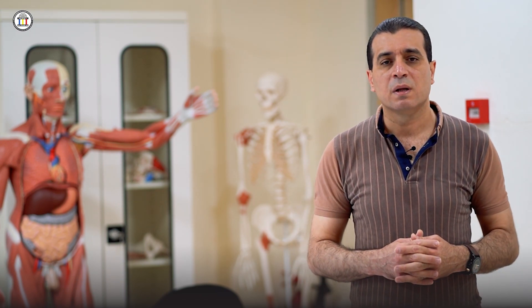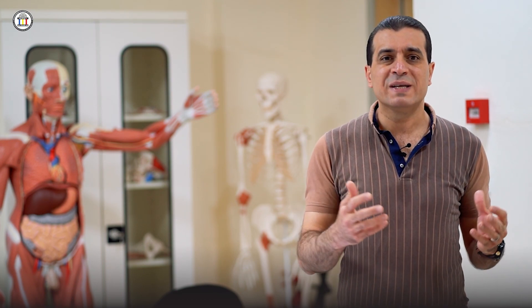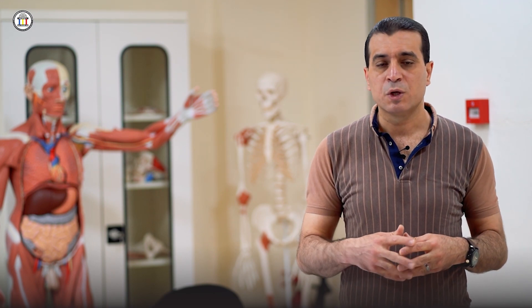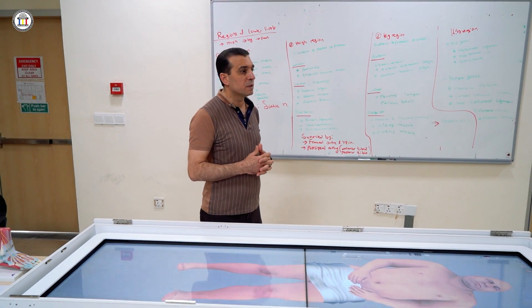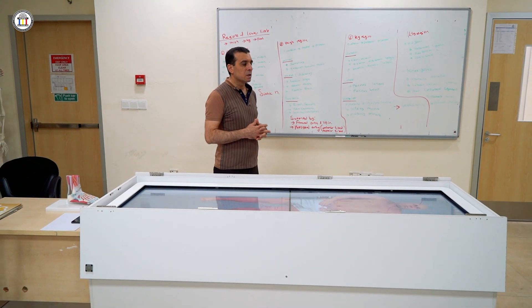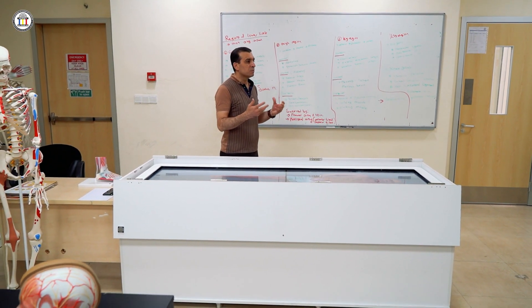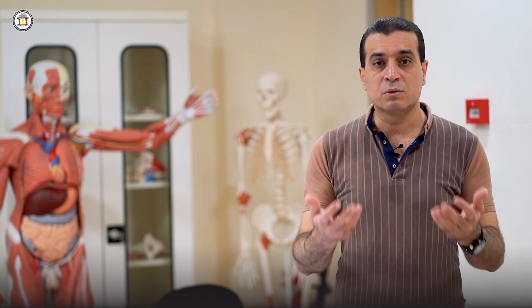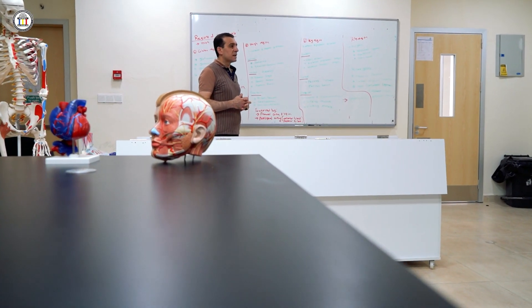Hello everybody. One of the subjects that we are taking at Komar University is human anatomy for both the students of dentistry and pharmacy. As you know, human anatomy is regarded as the father of medicine. Human anatomy is the science that deals with the structure and function of the body. We divide them into many systems, starting with an introduction to human anatomy, then the basic structures of the body — skin, muscles, bones, cartilage — and then the systems in detail: upper limb, lower limb, thorax, abdomen, pelvis, and head and neck.